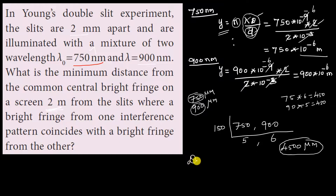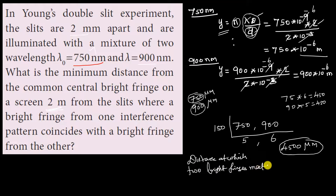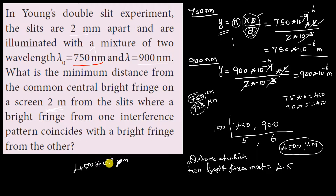The distance at which the two bright fringes meet is 4500 micrometers, which equals 4500 into 10 to the power of minus 6 meters, that is 4.5 millimeters. So the minimum distance from the central bright fringe where bright fringes from both interference patterns coincide is 4.5 mm.